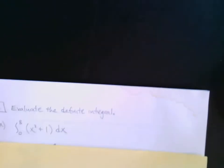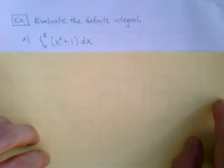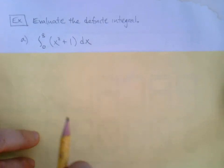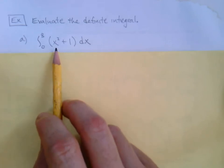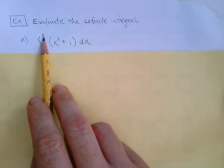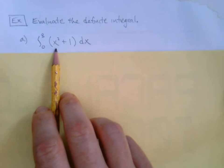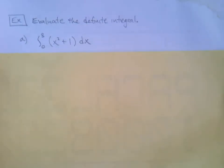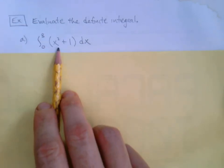Here we are. Evaluate the definite integral. You know what, we saw this same thing back in 5.4. Remember using the function x squared plus one? We looked at it starting at zero, ending at eight. We looked at left rectangles and then in part b we looked at right rectangles. Hey, now we're gonna look at this function—we're gonna get the area exactly.